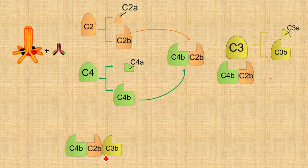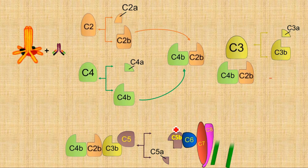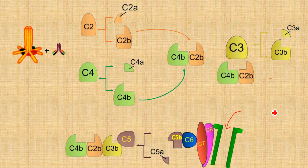The second option: if the C3 convertase complex attaches to a molecule of C3b, they form a new complex with the ability to break C5 into C5b and C5a — this complex is named C5 convertase. C5b then recruits C6, C7, C8, and C9. C9 forms a channel, allowing movement of water and fluids into the bacterial body. The movement of ions creates osmotic imbalance, and the bacterial cell undergoes lysis.